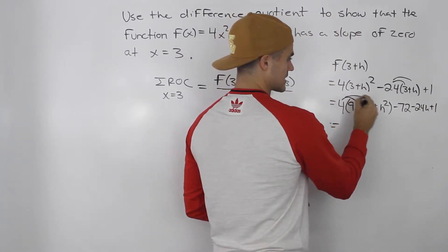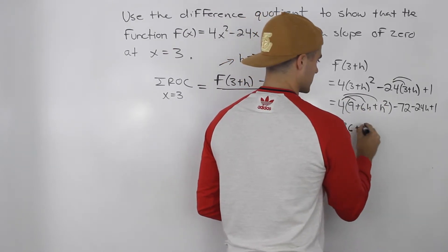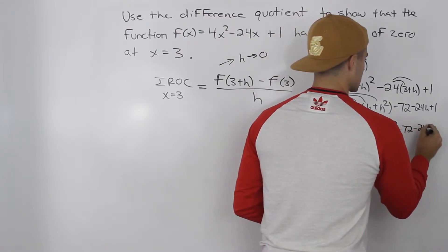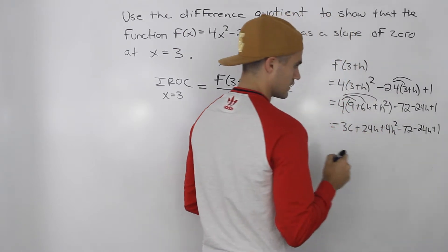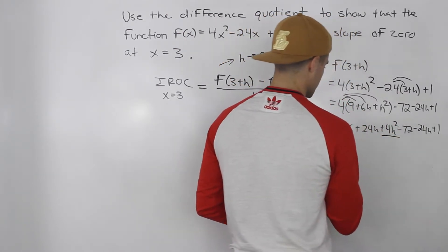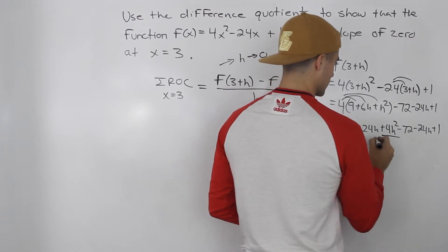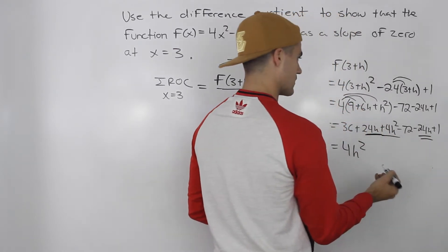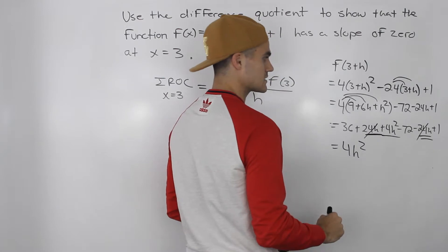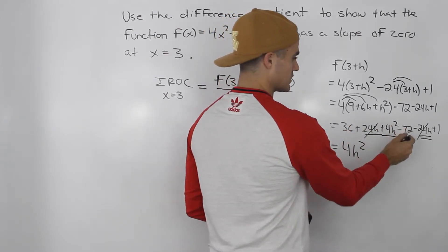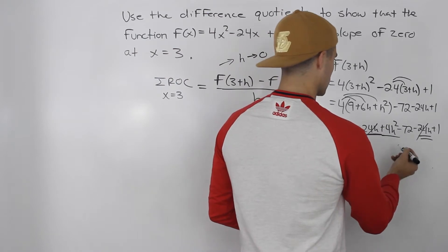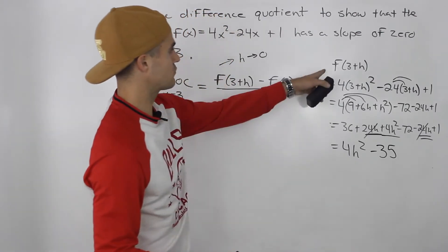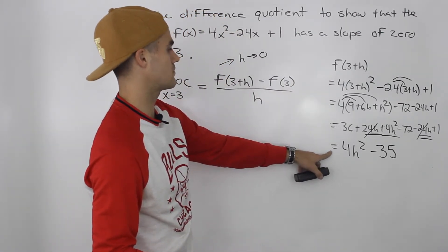Now we can bring this 4 inside this bracket here. So we'd have 36 + 24h + 4h² - 72 - 24h + 1. Okay, so what are the like terms here? Notice the 4h² is by itself, so we'll leave that by itself. The 24h minus the 24h, those net out to 0, so those go away, so that's nice. And then we got 36 - 72 which is negative 36 plus 1 would give us -35. So f(3 + h) reduces to 4h² - 35.